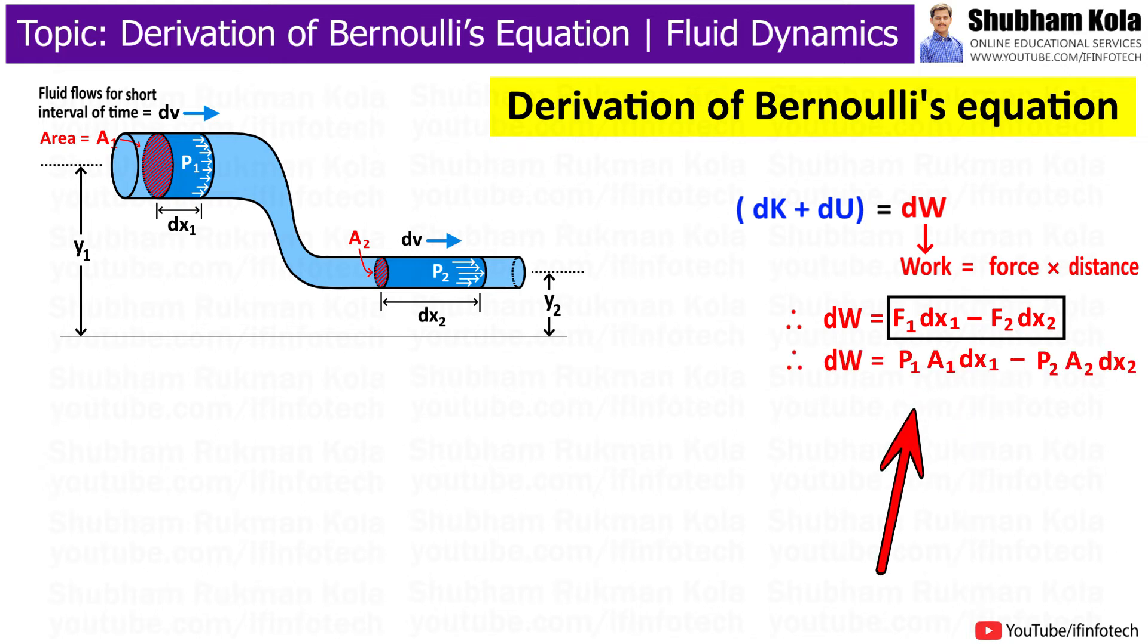Therefore, the work done on fluid is given as dW equal to f1 dx1 minus f2 dx2, where force equal to pressure into area. Here the water to the left of volume 1 will do positive work since it forces in the same direction as the motion of fluid. Here the water to the right of volume 2 will do negative work on our system since it pushes in the opposite direction as the motion of fluid. Therefore, dW equal to p1 A1 dx1 minus p2 A2 dx2.